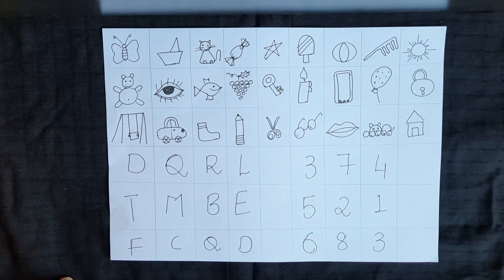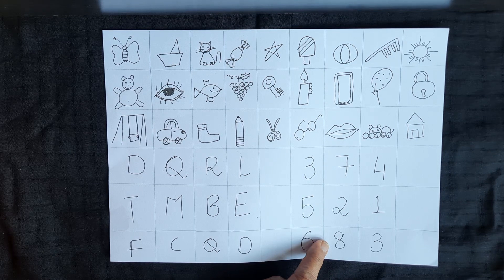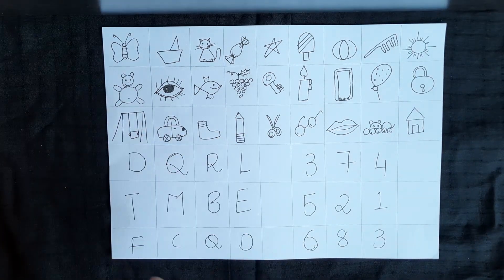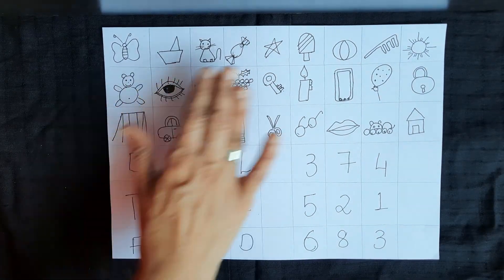You can use an alphabet grid like this or you can use a number grid like this. Depending on your child's level of functioning you can start off with maybe a smaller grid and then go over to a bigger grid like this.